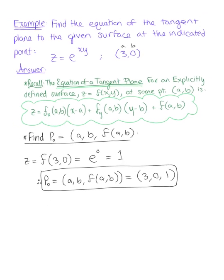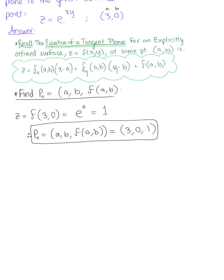And so we're now ready to go ahead and find the normal vector defined by the gradient. So we have the partial derivative of our function with respect to x is going to be y times the natural exponential raised to the xy.